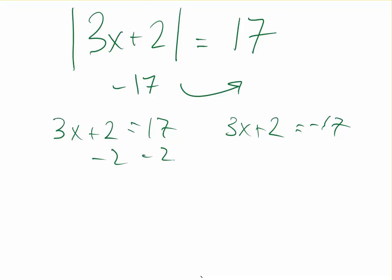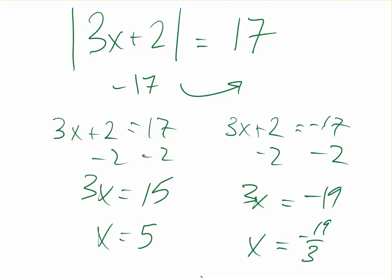Subtract 2 on each side. So negative 19. 3x equals negative 19. 3x equals 15. And solve. x equals 5. And x equals negative 19 thirds. And we don't need to reduce that.